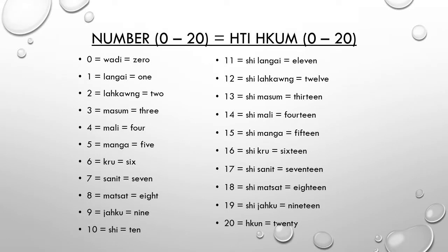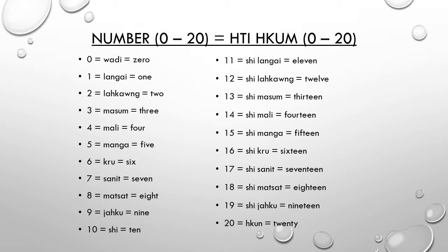Now we are going to count numbers from 0 to 20. We are going to count numbers from 0 to 9: 0, 1, 2, 3, 4, 5, 6, 7, 8, 9.